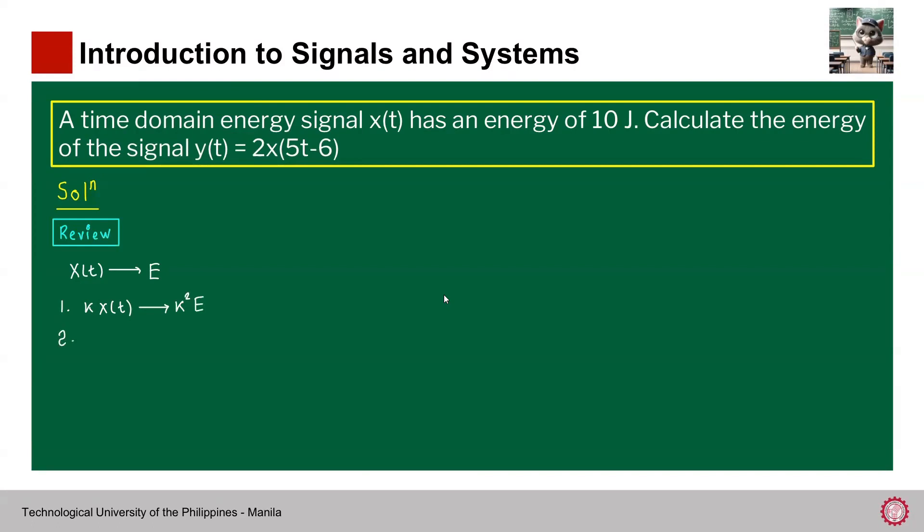Number two. If we perform time scaling, so let's say we have x(kt), this is a time scaling operation. So what happens is that the energy would be divided by k. So the inverse, let's say x(t/k), so it would multiply. So t over k, what will happen here is that the energy would simply be k multiplied by E.